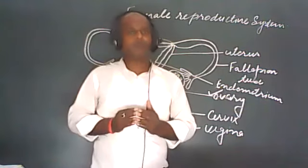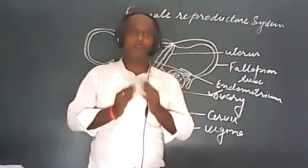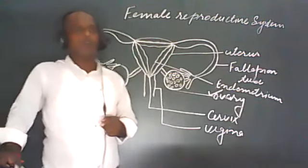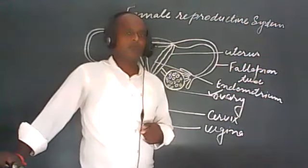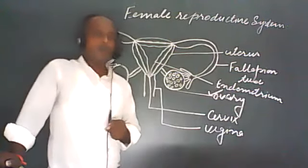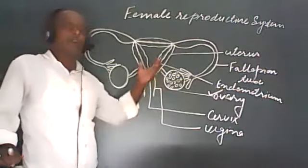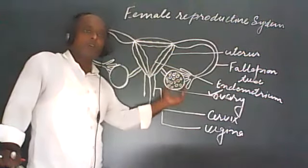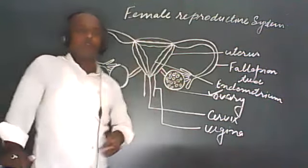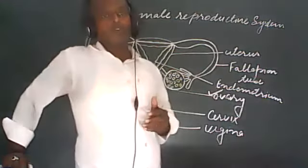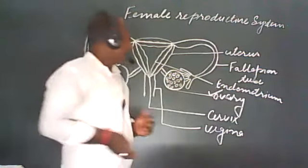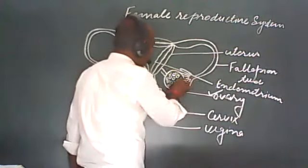After puberty, after starting of the menstrual life in females, there is the releasing of one ovum from each ovary in an alternate way. If there is releasing of an ovum from one ovary, then in the next month there will be releasing of an ovum from the other ovary — in alternate way.